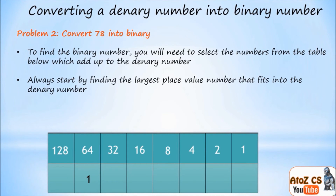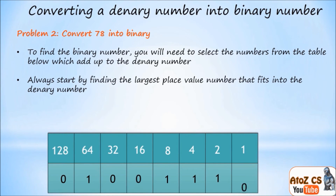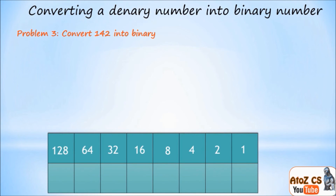Taking 64 away from 78 leaves me with 14. I'm going to use eight, four, and two. Adding those four numbers together gives me 78. I don't need any other numbers, so I replace them with zero. My answer for 78 in binary is 01001110.